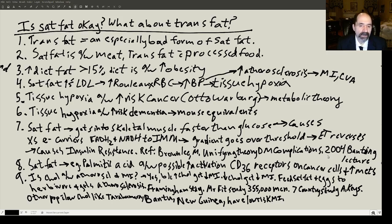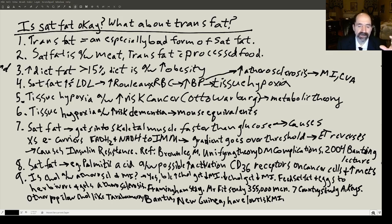If saturated fat was good for us, we would have a way to process it. We're made to process starch — that's how our metabolic system works. When excessive fat is given to us from a dietary sense, we get sick. Saturated fat also activates the CD36 receptor, and when present in excessive amounts — especially palmitic acid, the C16 saturated fat — that is thought to increase the risk of metastatic cancer. This palmitic acid activation of CD36 receptor on cancer cells is an important mechanism of increasing the chance that cancer will become metastatic.